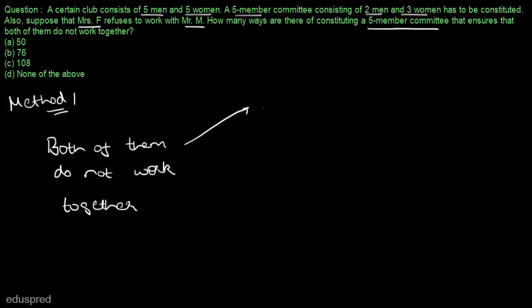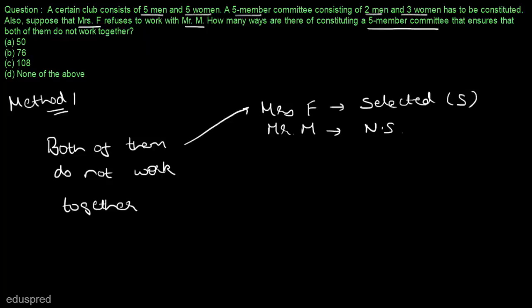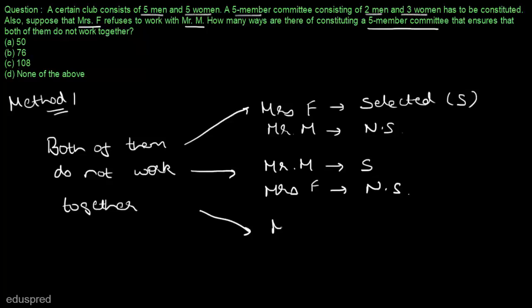The first case could be that Mrs F is selected (S) and Mr M not selected (N). Case 2 could be that Mr M is selected and Mrs F is not selected. And the third case could be that both of them are not selected — Mrs F not selected and Mr M not selected. These are the three cases if we want to find the number of ways in which both of them do not work together.